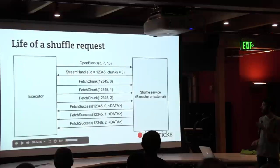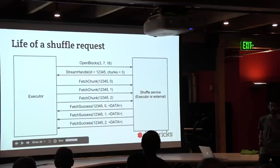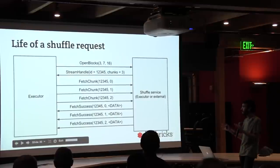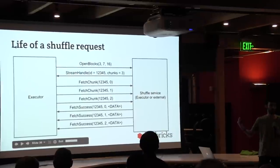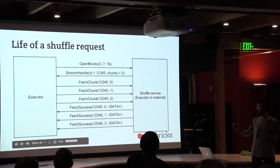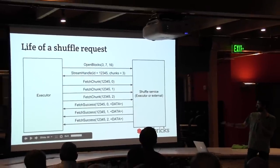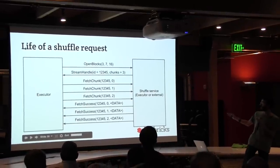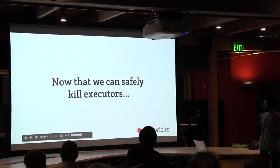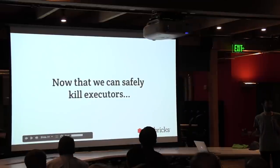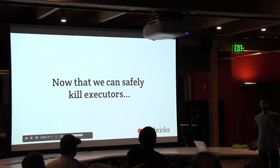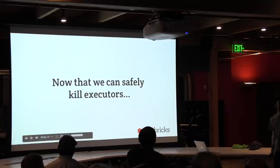That's a quick overview of how the shuffle works. Now we can safely kill executors and still have the external shuffle service, which executors can still talk to and fetch the data from. We have solved one problem of dynamic scaling, and I'll hand it back to Andrew to describe the rest.